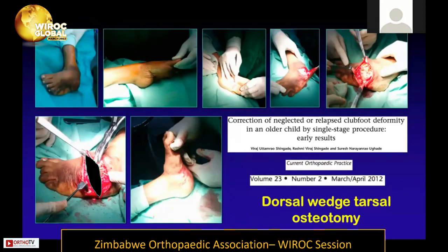Another method is a one-stage procedure described by a colleague from India: a wedge tarsectomy, developed because patients from tribal areas wanted to return to their villages quickly. A large wedge of bone is removed dorsolaterally, excess skin is excised, and the foot is pinned with K-wires. Results are good short-term, but there are concerns about long-term outcomes when joints have been violated and fused.